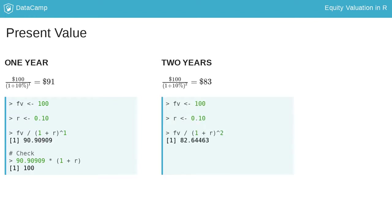Assume the future value two years from now, FV, is equal to 100. To get to the present value today, we have to discount this $100 two periods. In other words, FV divided by 1 plus 10% raised to two years, which gets us $83 today. So the farther out the cash flow is, the less the value of that cash flow is today. In other words, money today is worth more than money tomorrow.